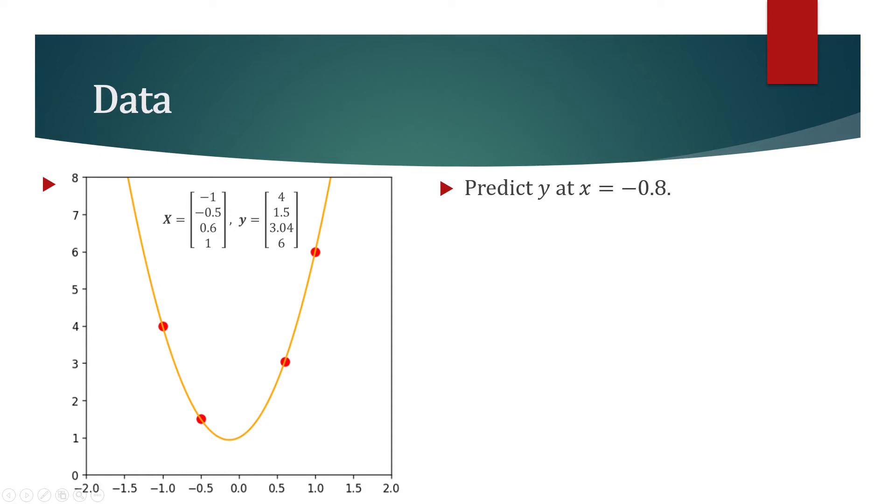On this plot, the red points correspond to the entries in the dataset. For example, at x equals minus 1, y equals 4. At x equals minus 0.5, y equals 1.5 and so on.